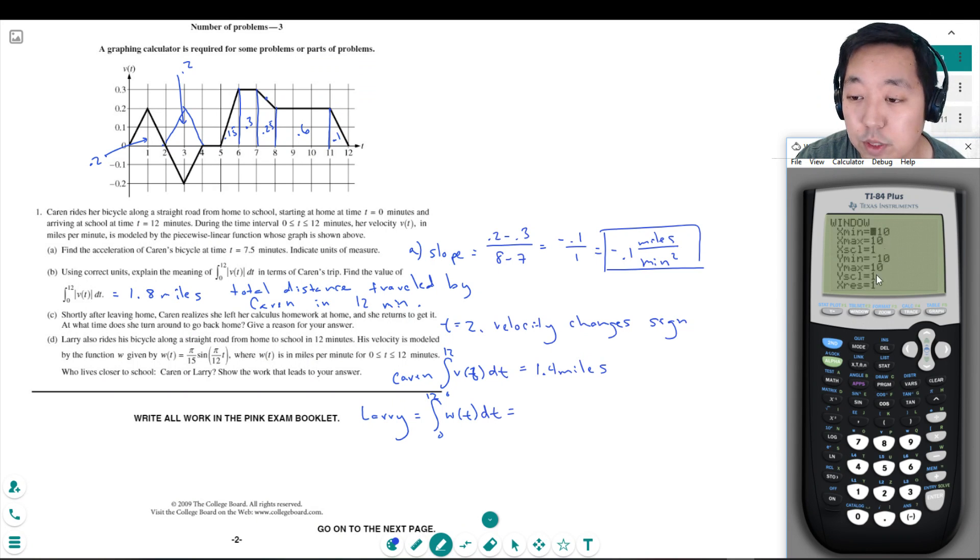So let's window this correctly. I at least want to go from 0 to 12. So I'll make that 0, 12. And then the negative is like probably negative 1 to 1. We'll scale that by like 0.1.